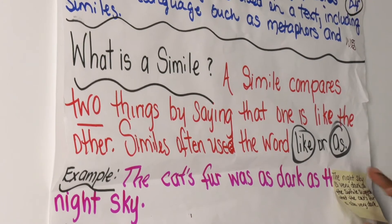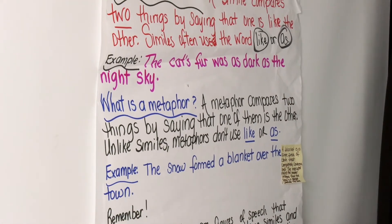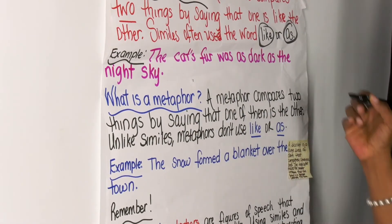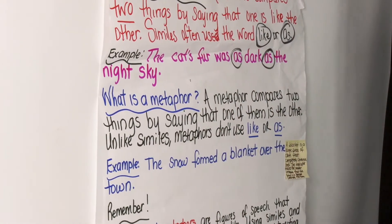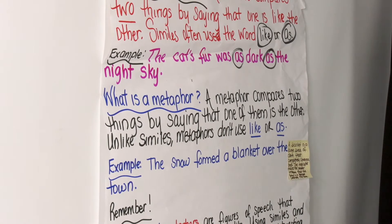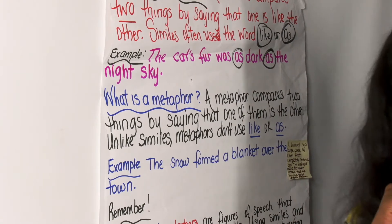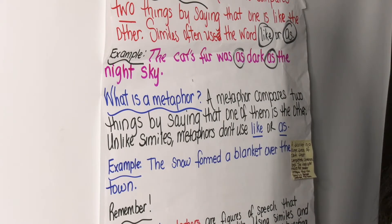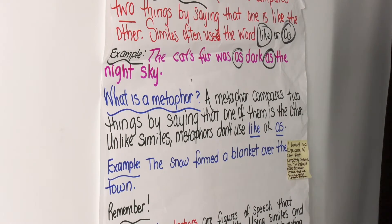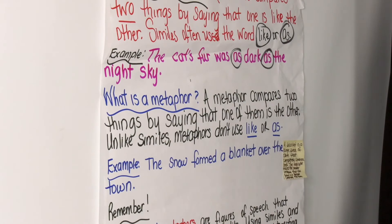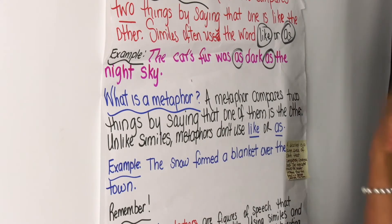Let's move on. Now I'm going to give you an example: 'The cat's fur was as dark as the night sky.' We used the word 'as.' Who can tell me what that simile means? Okay, Jasmine — you are so right. It means that the night sky is very dark, so the simile suggests that the cat's fur is also very dark. It means the cat's fur is dark like the night sky.